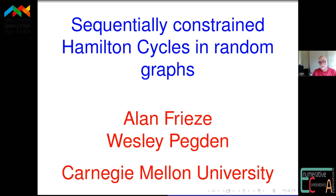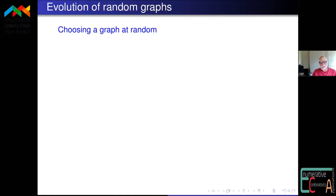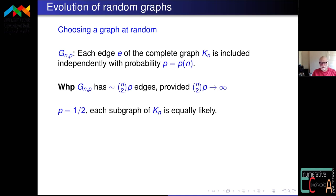So the subject is: you choose a graph at random, look at its properties, and try to say a random graph has this property with very high probability, or doesn't have this property with very high probability. You find the properties and the size of the graph with all these parameters. There are basically two most popular ways to choose a random graph: G(n,p), where you take every possible edge from the complete graph and include it with probability p, where p could be a function of n.